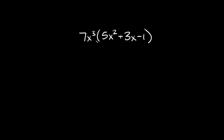So here we have 7x cubed times (5x squared plus 3x minus 1). In order to multiply just a single term by something inside a set of parentheses, we can just distribute. First we distribute 7x cubed times 5x squared — multiply the numbers together first, so 7 times 5 equals 35, and then x cubed times x squared: whenever you're multiplying exponents you simply add them, so that's x to the fifth.